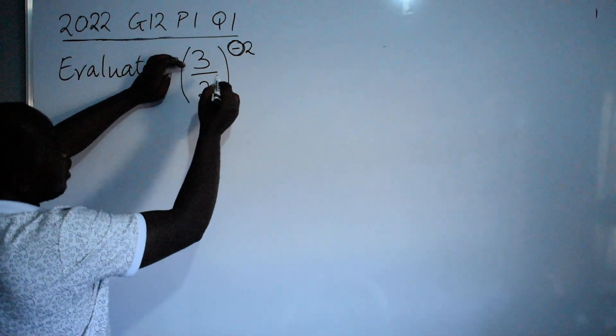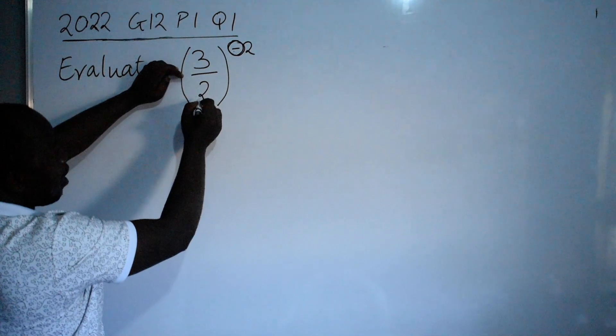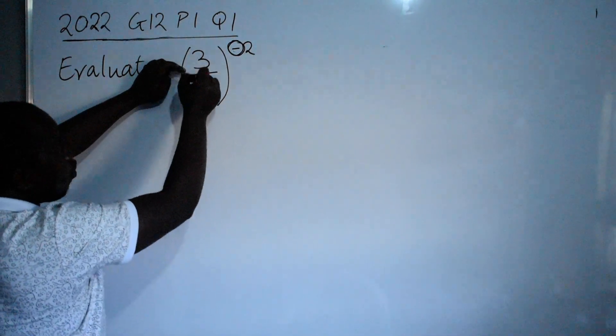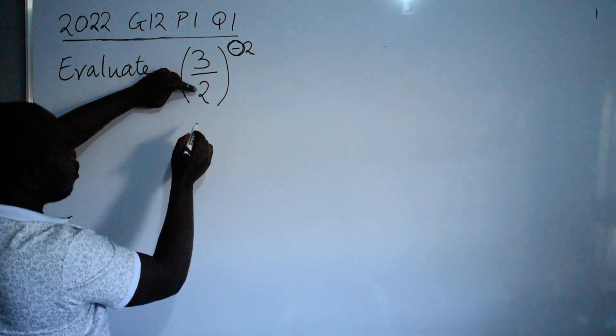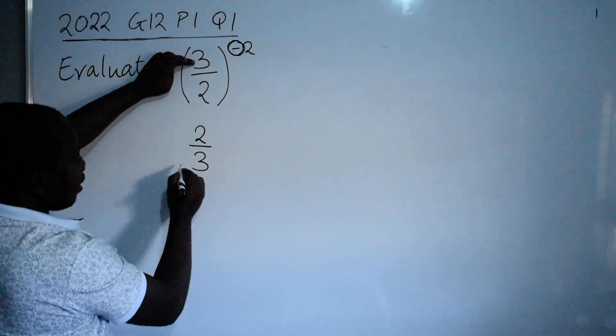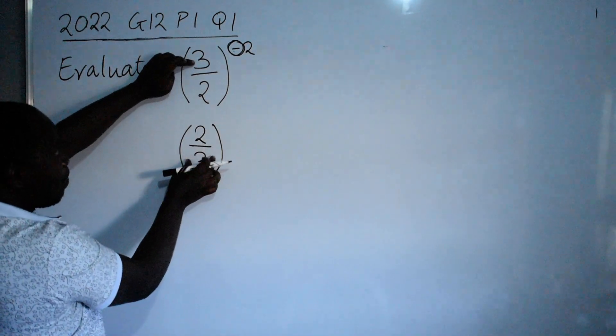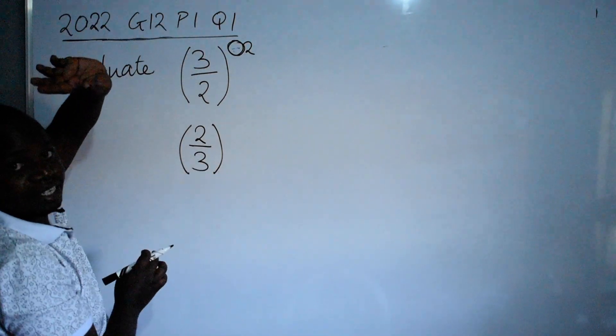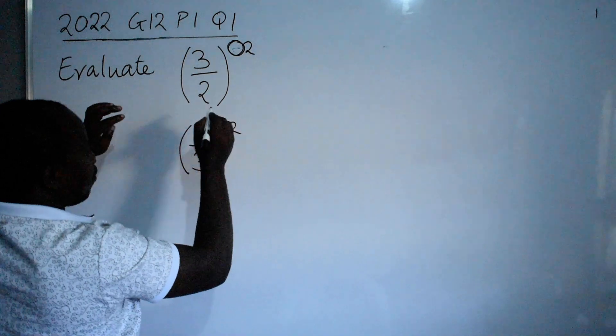So having said that, I will swap the two numbers, meaning the 2 will be the numerator, 3 will be the denominator. By swapping it means I am done with the negative, I will remain with the positive 2.